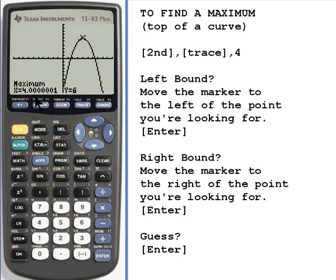And here it's giving me an answer. It's saying that the coordinates for this point, this maximum point, are x equals 4 point, and there's a bunch of zeros followed by 1, and y equals 6. Well, the way the calculator works is it kind of tries to get closer and closer and closer. So at a certain point it stops. The actual coordinates for this should just be 4 and 6.